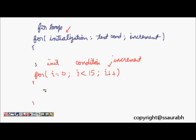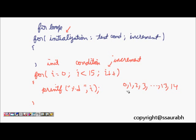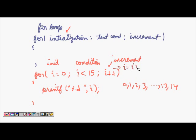We can say printf %d and then i. What we will get is 0, 1, 2, 3 ... 13, 14. When i becomes 15, the condition fails and it exits. There are many other possibilities — this was one initialization way. You can also increment by other values, like i = i + 2, incrementing by 2 each time.